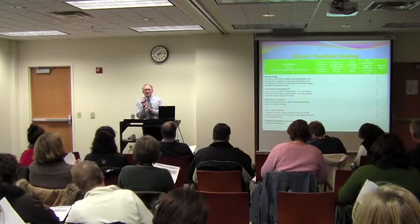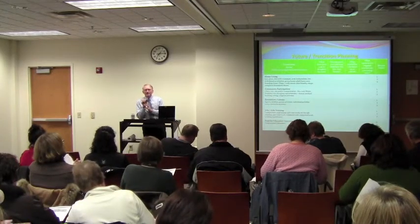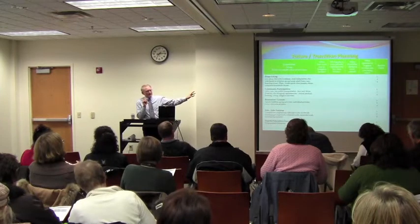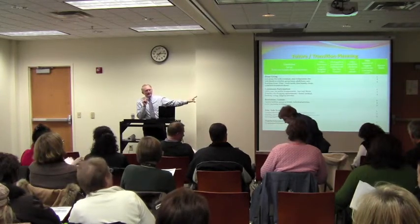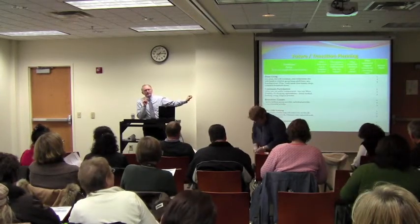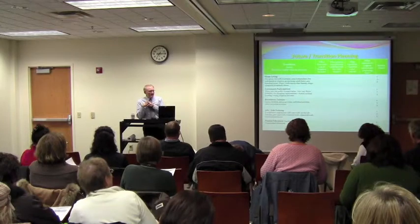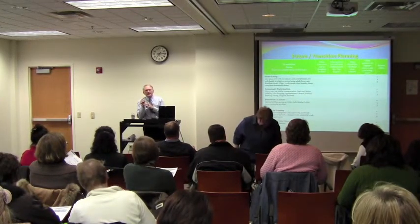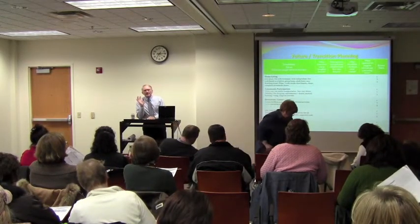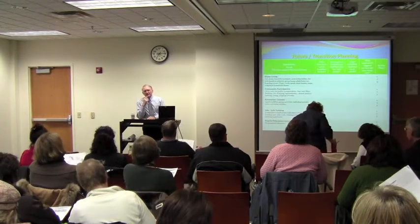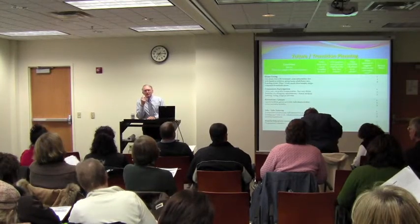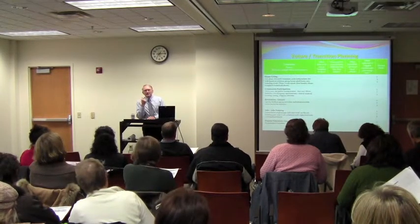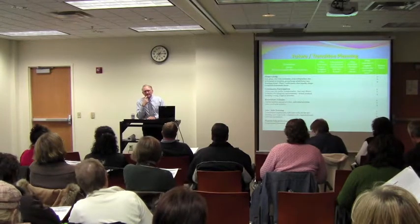Most of you have been, or will be, at IEP meetings where they talk about the five transitional areas. Those are the areas: home living, community care, direct leisure, jobs, and education. Your IEP team is required to work with you and with your son or daughter in addressing those five transition areas.